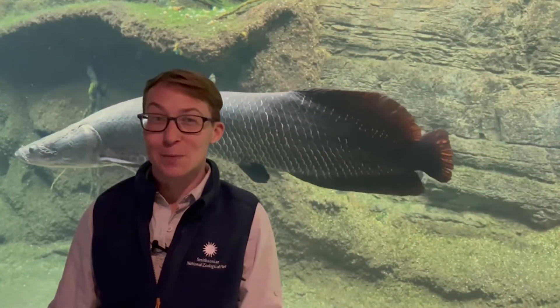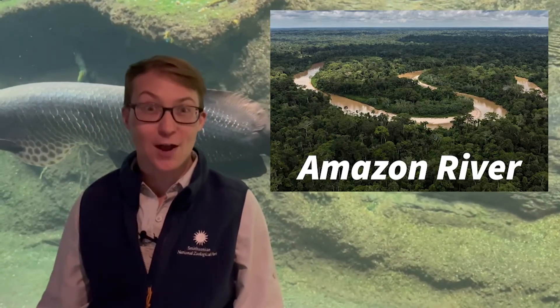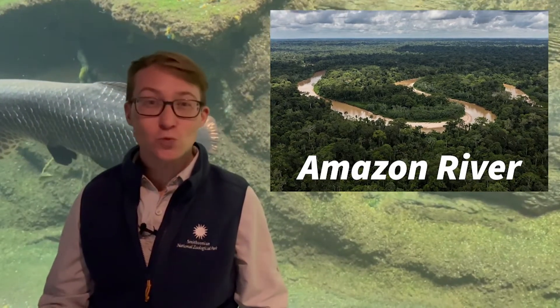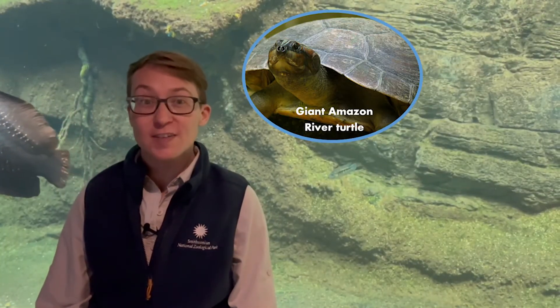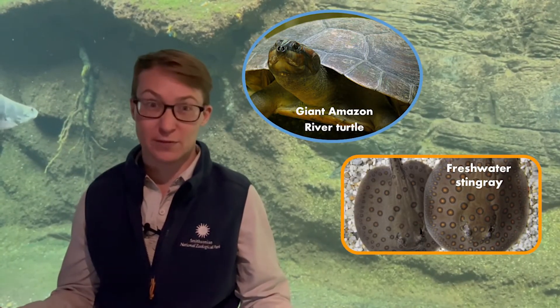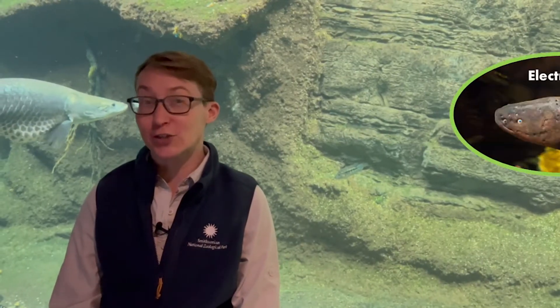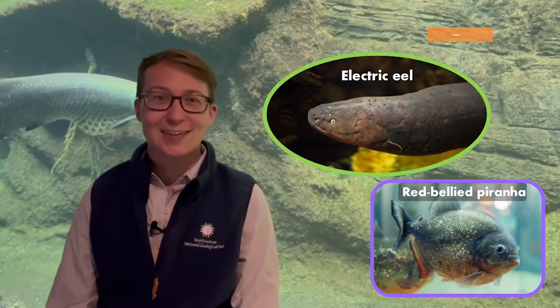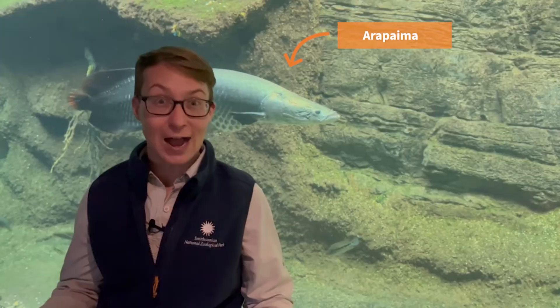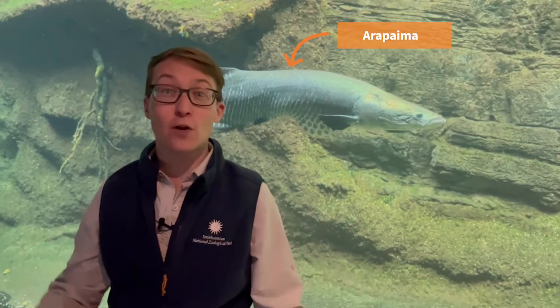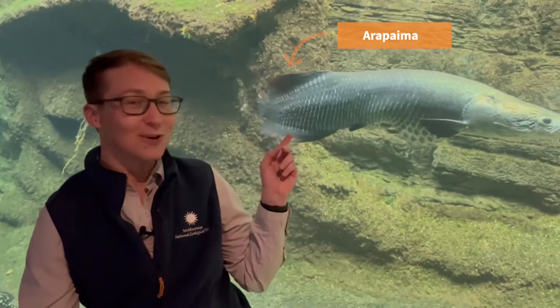Before we get to the bottom layer of the rainforest, let's talk about a big body of water — the Amazon River. It is one of the largest rivers in the world and home to many animals, including many different turtles, stingrays, and a ton of different fish. Some of the fish include electric eels, piranha, and arapaima, which are one of my favorites. Arapaima grow bigger than I do — 10 feet long and over 400 pounds. You can see one right there. Now let's go to the first layer of the rainforest at the very bottom.